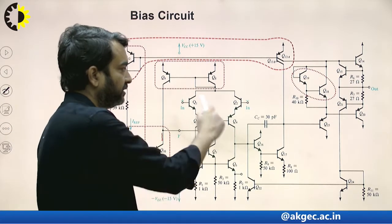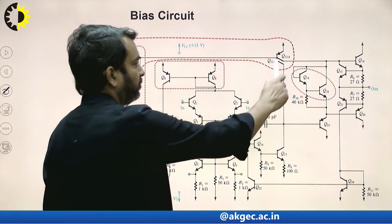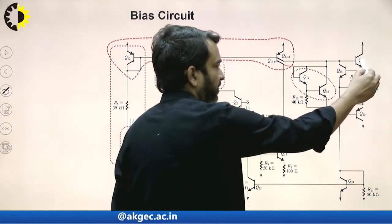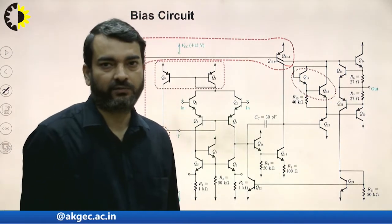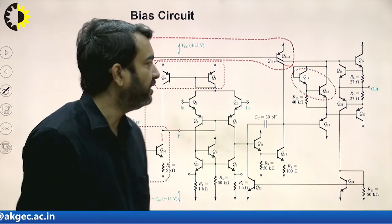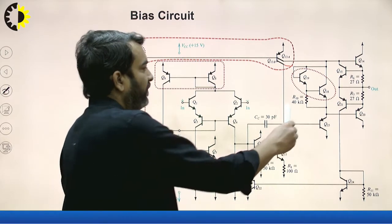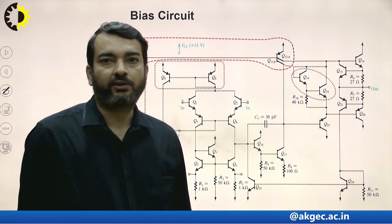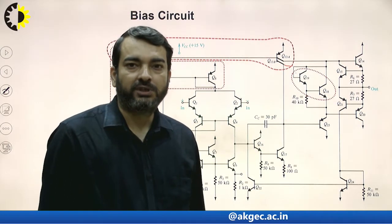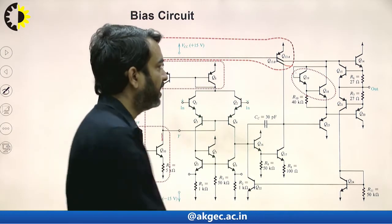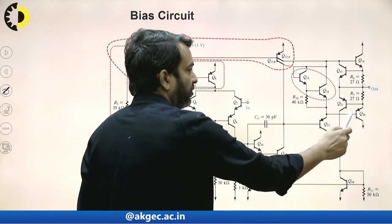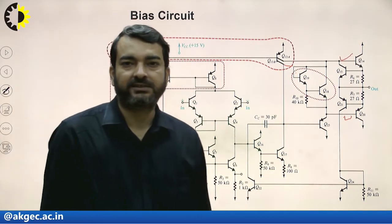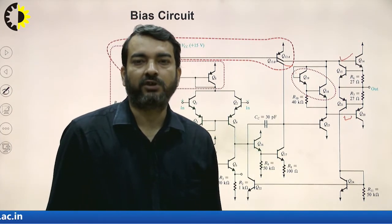Transistor Q13A is providing biasing to the output transistors Q14 and Q20, which form the class AB output stage. Another section consists of transistors Q18 and Q19. This particular set of transistors provides twice the VBE drop between the bases of transistors Q14 and Q20, which is necessary for providing distortion-less output.